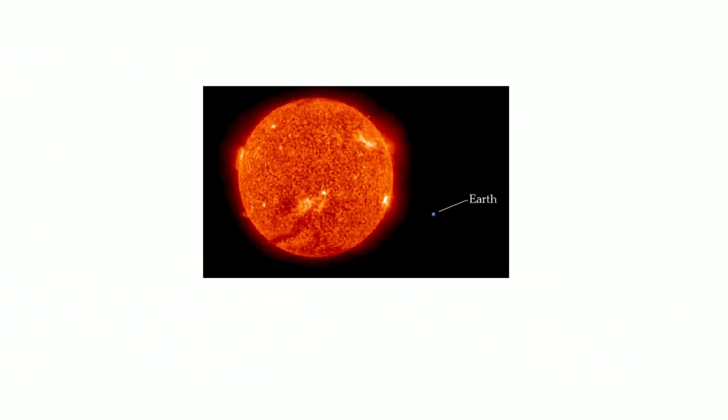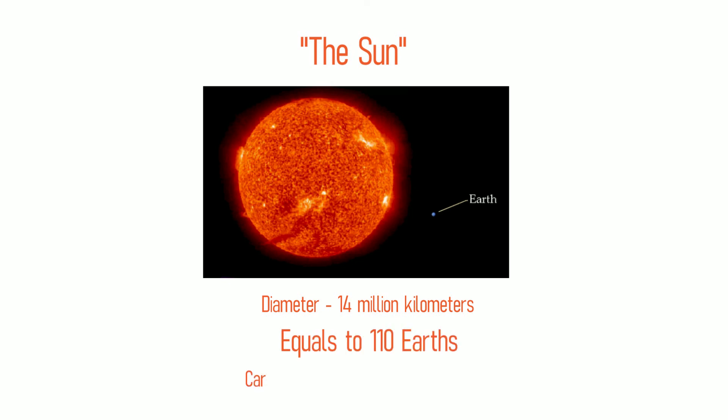But even a giant like Jupiter is nothing compared to the king of our solar system: the sun itself. Its diameter is an incredible 1.4 million kilometers, which is the equivalent of 110 Earths. It would take you about five years to drive around the entire circumference of the Earth in a car.